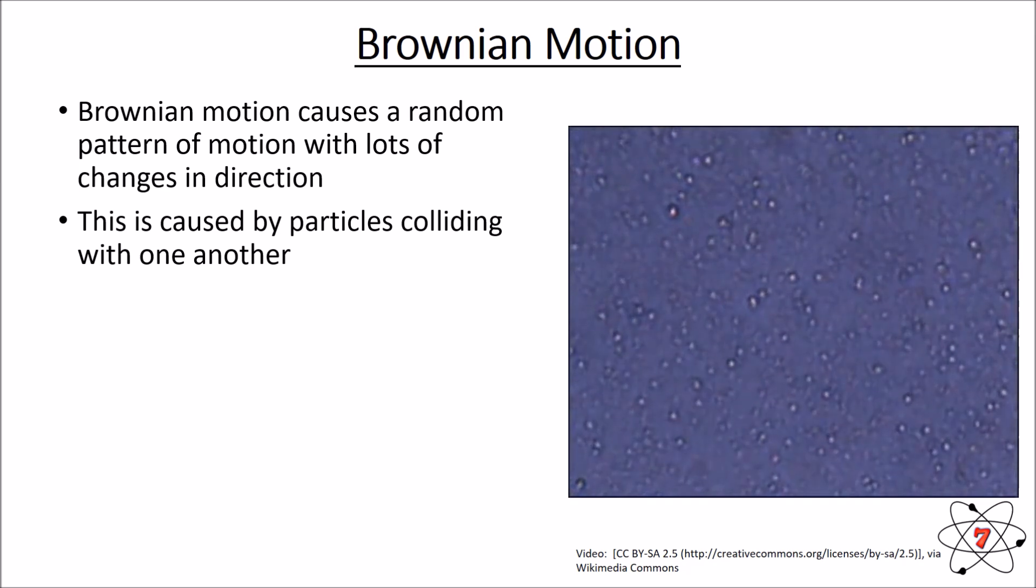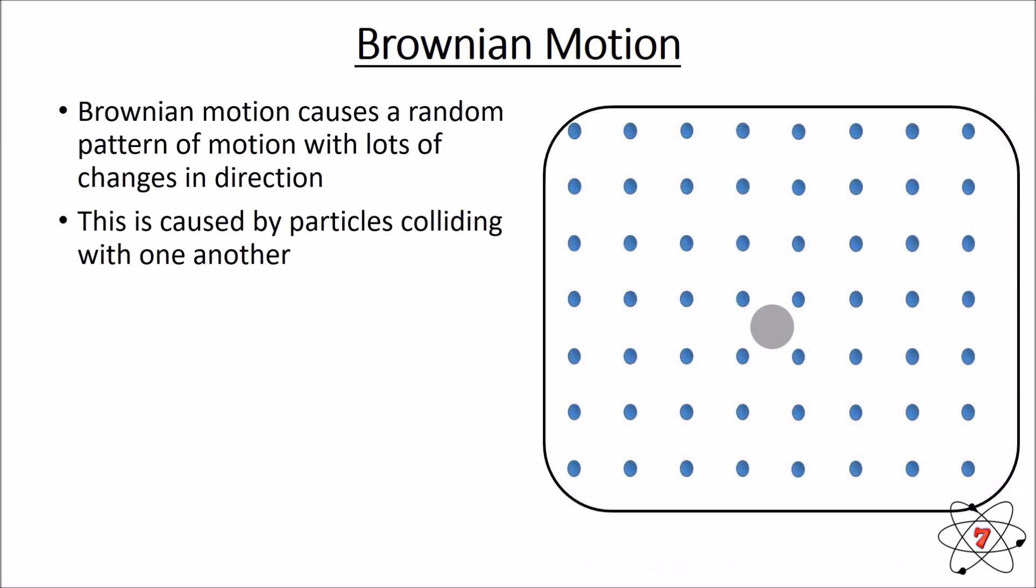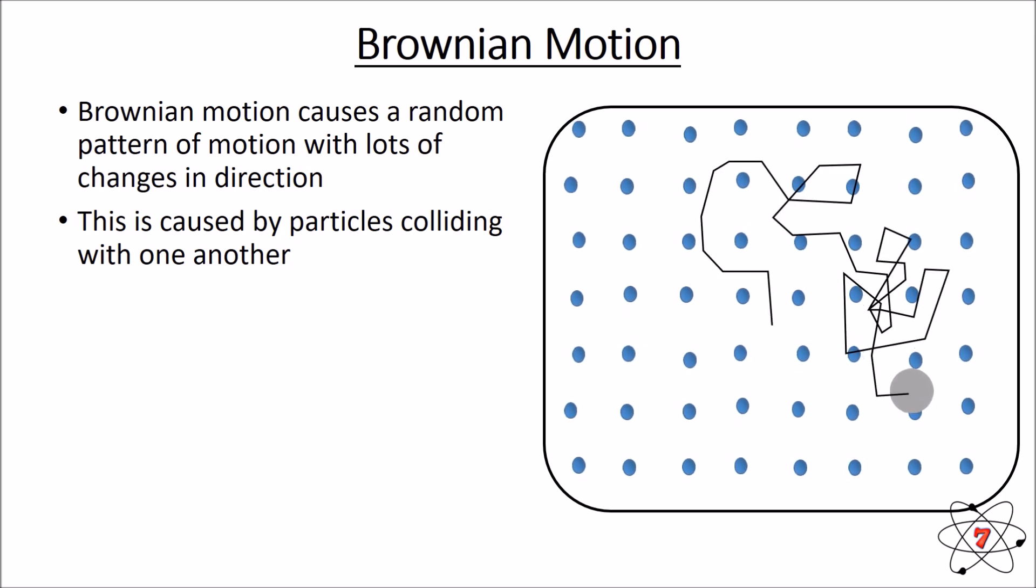Now we can see here in this video clip, there are particles vibrating. So we can see how Brownian motion works with this animation. The small particles are moving and they're vibrating and they keep on colliding with the large particle. Every time they collide with the large particle, they change its direction. So this is exactly how Brownian motion works because of the collision of particles. And we can see here the path that this particle took because it was hit by these smaller particles.